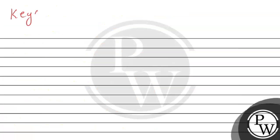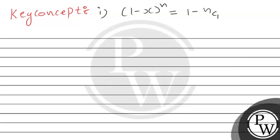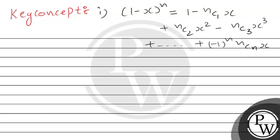Firstly, I will tell you the key concepts, और यह concepts आपकी help करेंगी इस question को solve करने में। First key concept is: (1 minus x) raised to the power N equals 1 minus NC1 times x plus NC2 times x squared minus NC3 times x cubed plus up to so on, plus/minus 1 raised to the power N times NCN times x raised to the power N. The second key concept is: integration of 1 divided by (x minus a) dx equals natural log of mod(x minus a) plus C, where C is the constant of integration.